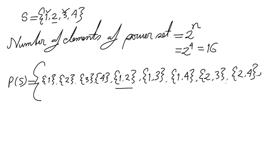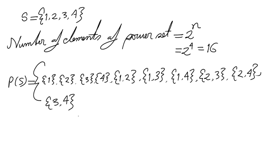Now starting with 3: we cannot take 1 or 2 because those sets are already listed. Our only remaining option is {3,4}. We have now generated all possible subsets with two elements.